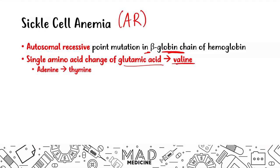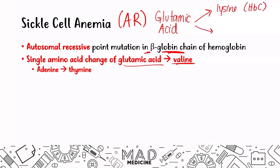Both hemoglobin S and hemoglobin C are caused by a shift from glutamic acid to another amino acid. If glutamic acid shifts to lysine, you get hemoglobin C. If it shifts to valine, you get hemoglobin S. A helpful mnemonic: L comes before V alphabetically, so lysine gives hemoglobin C, and valine gives hemoglobin S — because C comes before S.